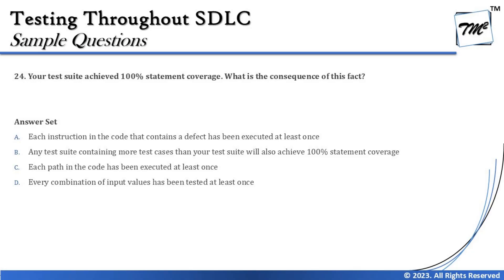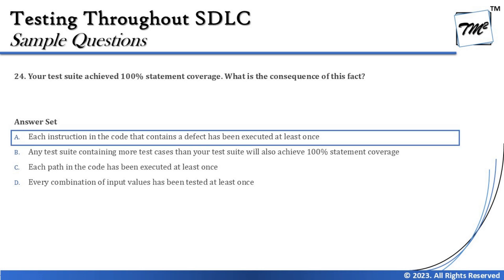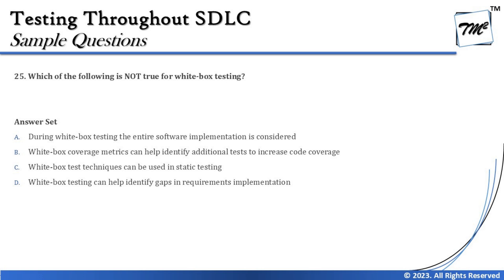Considering all four options, the most relevant answer is A. Option A says each instruction in the code that contains a defect has been executed at least once. The phrase 'contains a defect' simply reflects the common objective of testing — to find defects. We assume there may be a defect and that's why we execute every instruction. So the right answer for Question 24 is A. Don't get diverted by the wording 'contains a defect.'